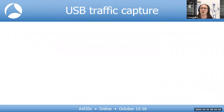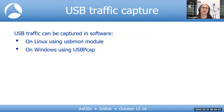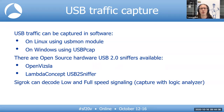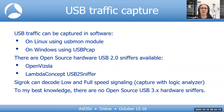Moving on to traffic capture. Traffic can be captured in software — on Linux with the USBMon module, on Windows using USBPcap. There are open-source hardware USB 2 sniffers available: OpenVizsla, which is not only open source but also an open hardware project, and the Lambda Concept USB 2 sniffer, for which only the software is open source. If you have a logic analyzer, you can decode low and full speed USB signaling with Sigrok. To my best knowledge, there are no open-source USB 3 hardware sniffers.